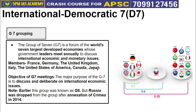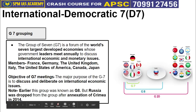India ranks fifth in terms of GDP but is behind in per capita GDP and overall level of development, so it doesn't fit the general G7 standard of developed nations. This group was previously known as G8 when Russia was also a member, but Russia was dropped in 2014 after the annexation of Crimea — a small island belonging to Ukraine that Russia forcefully acquired — after which G8 became G7.